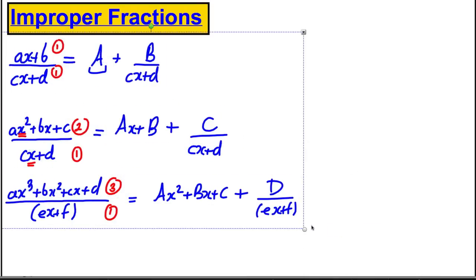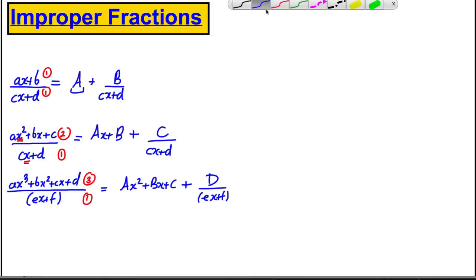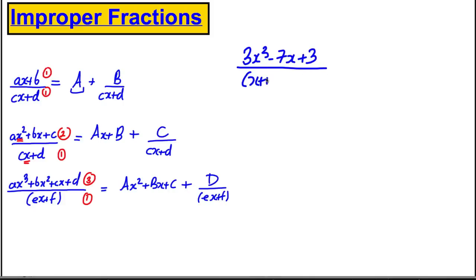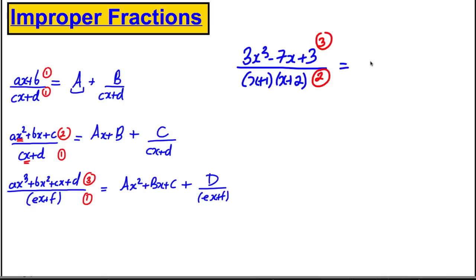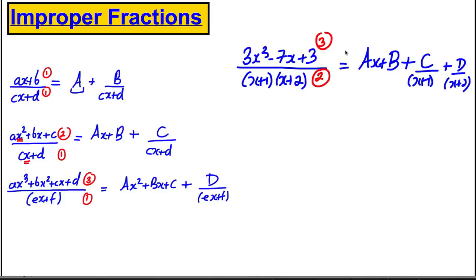These ideas continue in the way you'd expect. For example, if I had something like (3x³ − 7x + 3) all over (x + 1)(x + 2): I've got a cubic on top and a quadratic on the bottom. 3 minus 2 is 1, so I'll have a linear term (ax + b) left over, plus c over (x + 1) and d over (x + 2). That's the idea we're going to use in the following two examples.